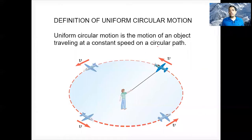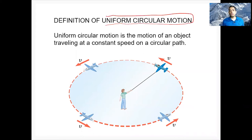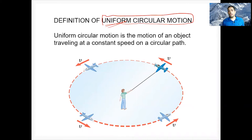Welcome to the online lecture of Physics 103. Today I'm going to talk about uniform circular motion. First of all, what is circular motion? Circular motion is motion in a circle. Now when I say uniform circular motion, it means the motion happens in such a way that the speed is constant — let's say here the speed is three meters per second, and here the speed is also three meters per second.